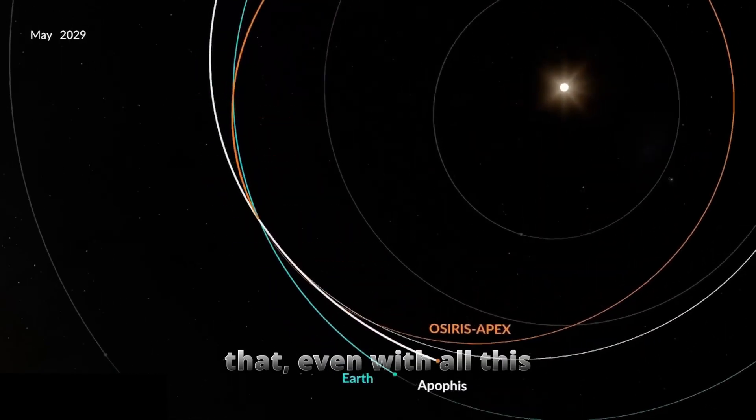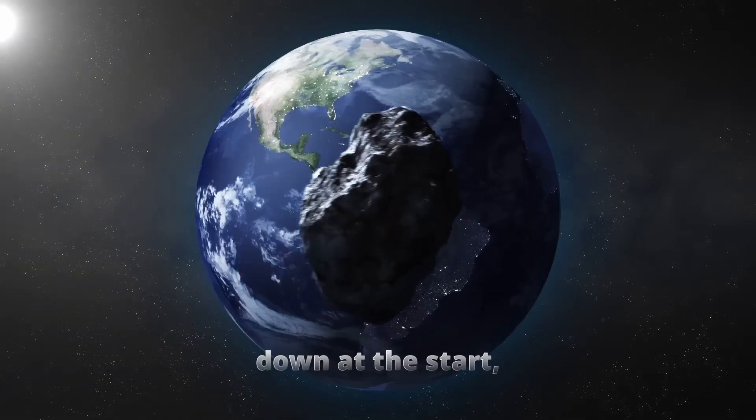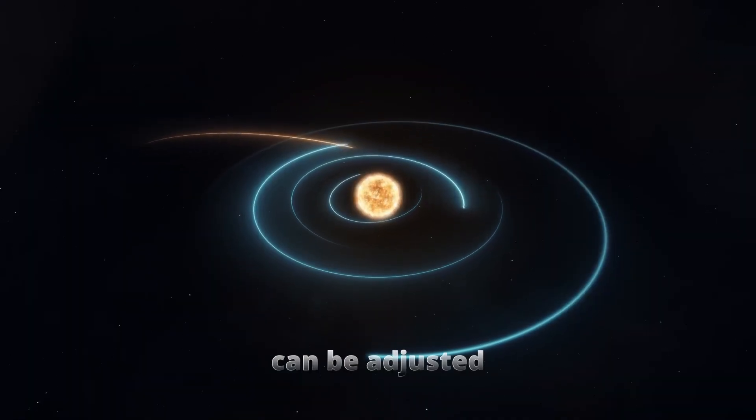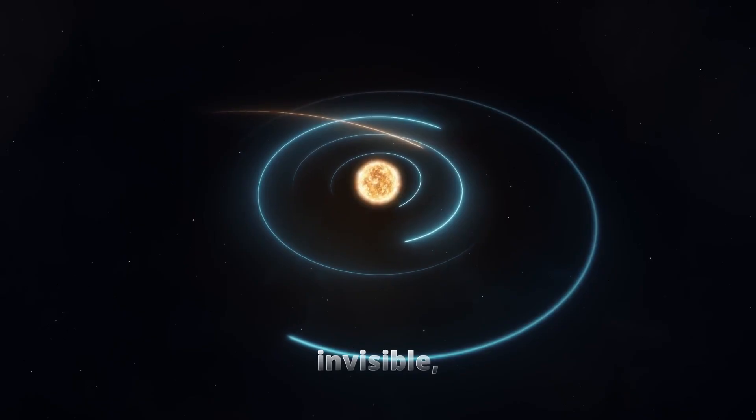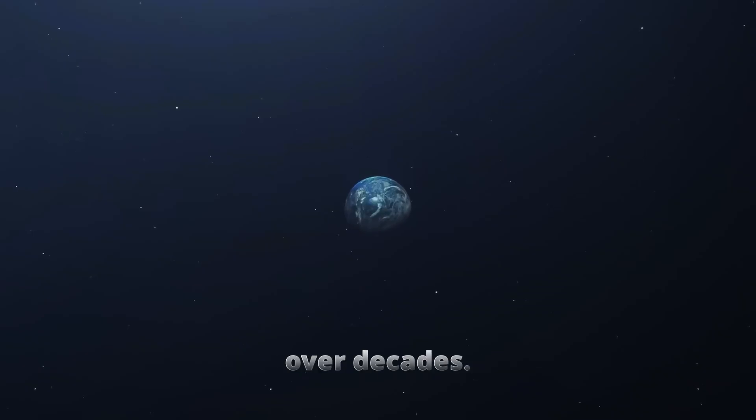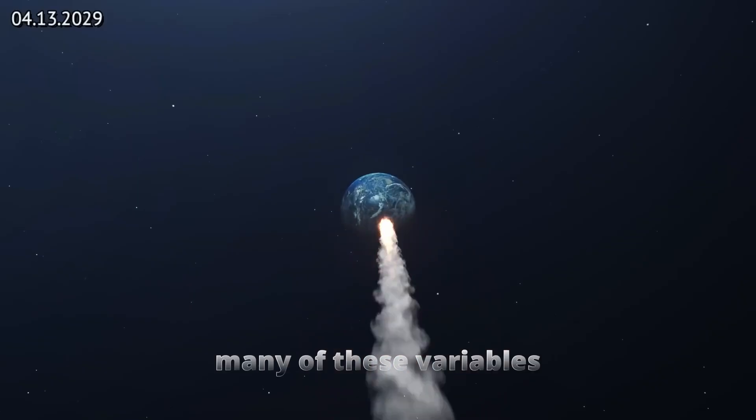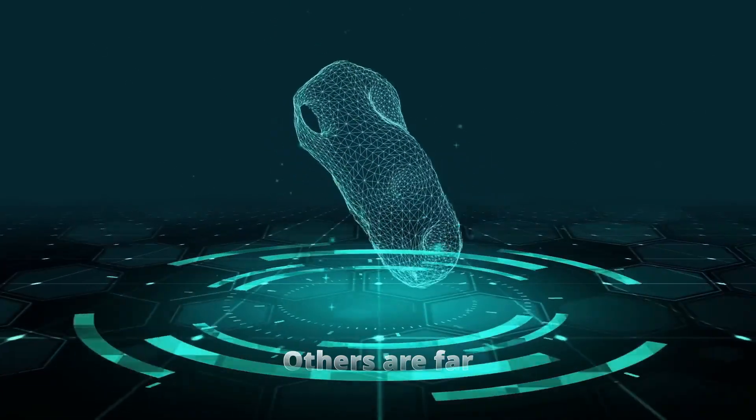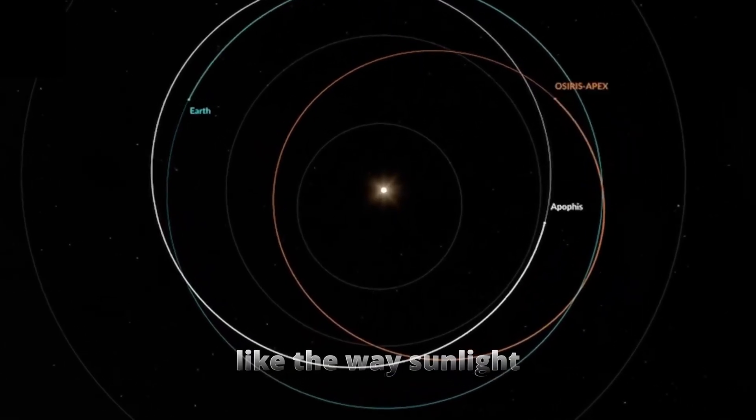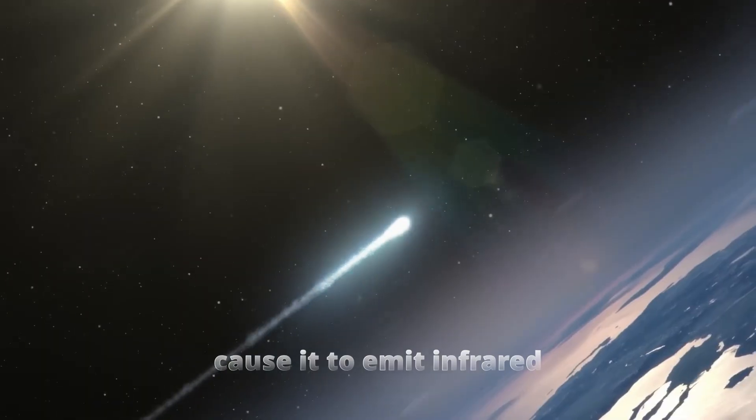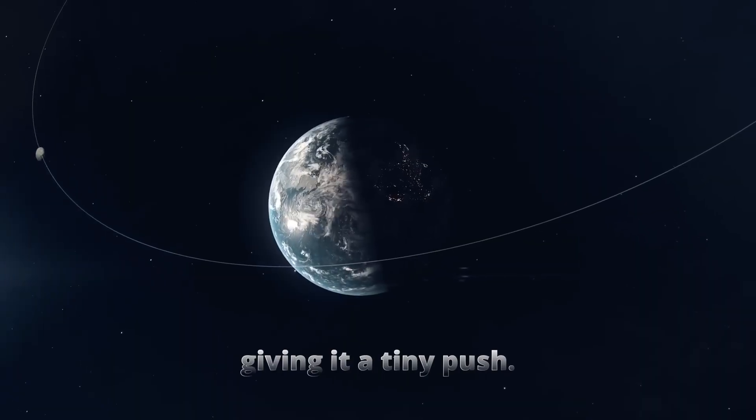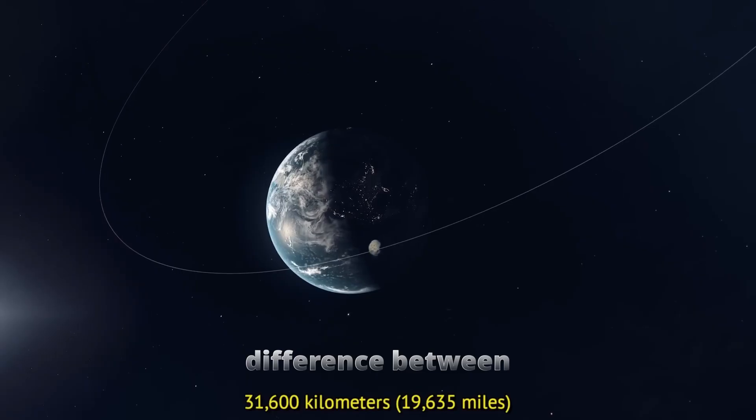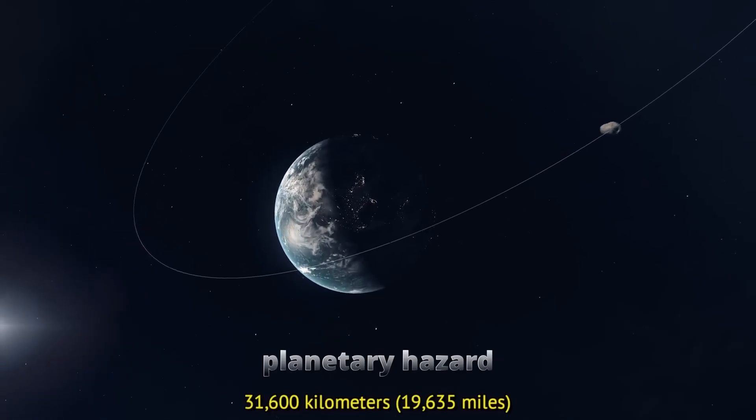The fascinating part is that even with all this tracking, the fine details weren't easy to nail down at the start because space isn't empty in terms of forces. An asteroid's route can be adjusted by subtle nudges, some of them almost invisible, that slowly accumulate over decades. Astrophysicists have to weigh many of these variables in every model. Some are obvious, like gravitational pulls from planets and moons. Others are far more delicate, like the way sunlight can heat one side of a rotating asteroid and cause it to emit infrared radiation unevenly, giving it a tiny push. That's not science fiction. It's a measurable effect, and it can make the difference between safe distance and planetary hazard many orbits later.